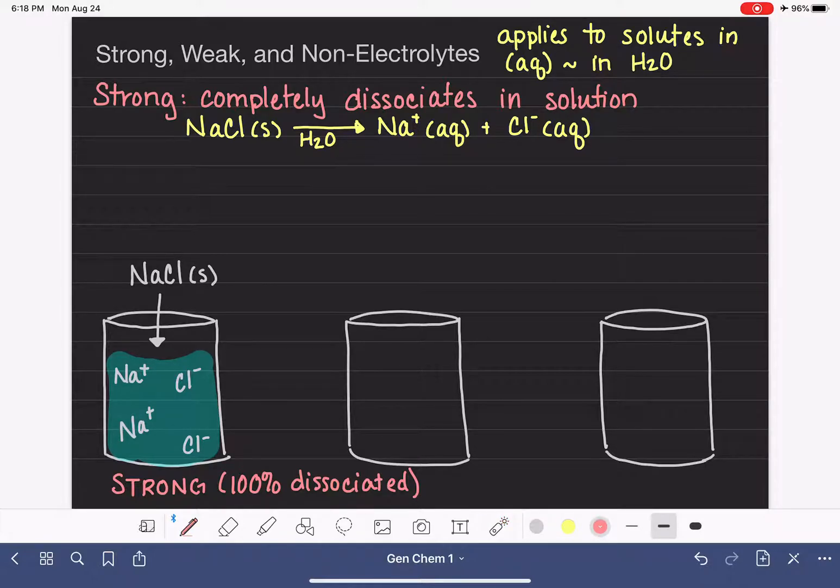So let's talk next about the weak electrolytes. A weak electrolyte is one that partially dissociates.